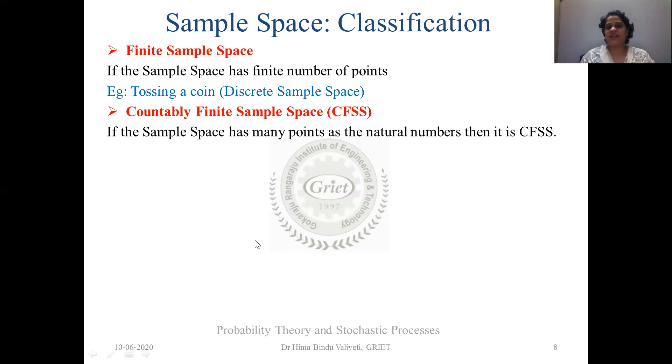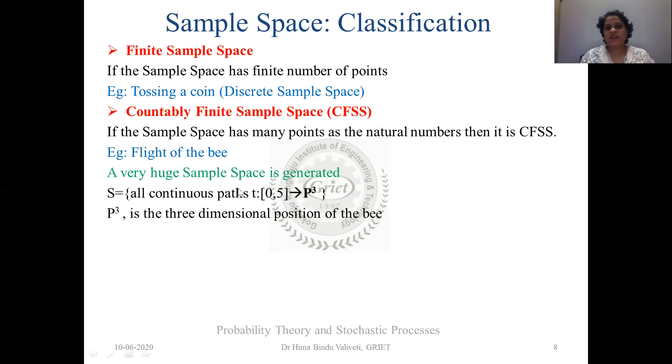The second one is countably infinite sample space. So the sample space has as many points as the count of the natural numbers. So the natural numbers generally range between 0 and infinity. But if at all you talk about the flight of a bee, I'll explain it with the help of an example. A very huge sample space is basically created. So if I'm just taking the time to be 0 to 5 seconds and I just want you to draw the flight of a bee. The position where bee is and for about 5 hours, you can predict the time to be anything. For about 5 hours or 5 days, whatever it is. How much ever you want, you can put it down.